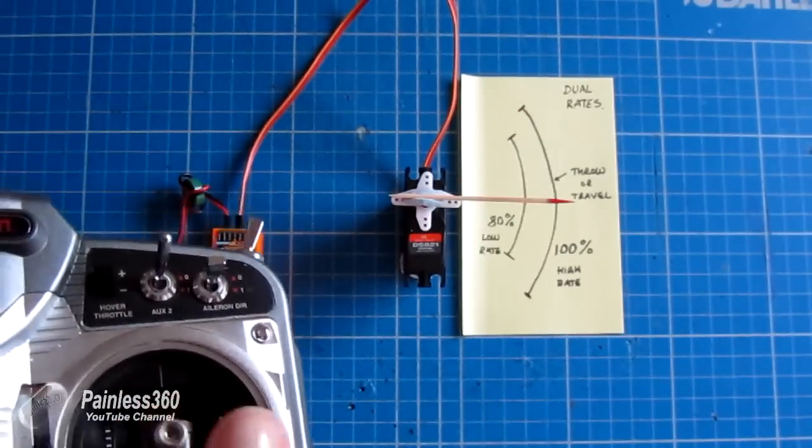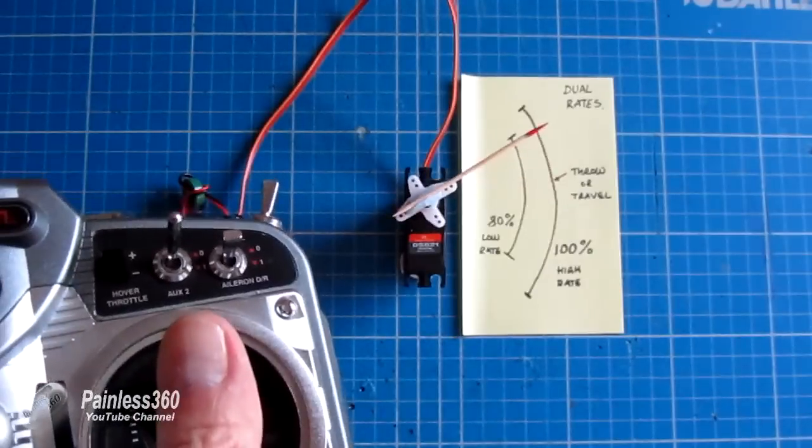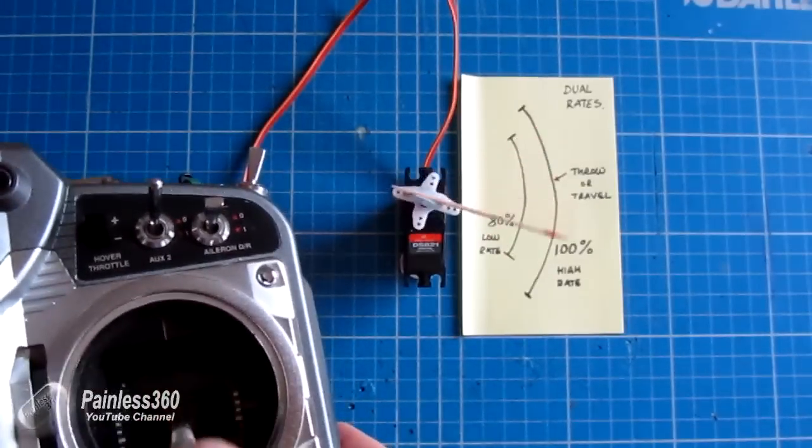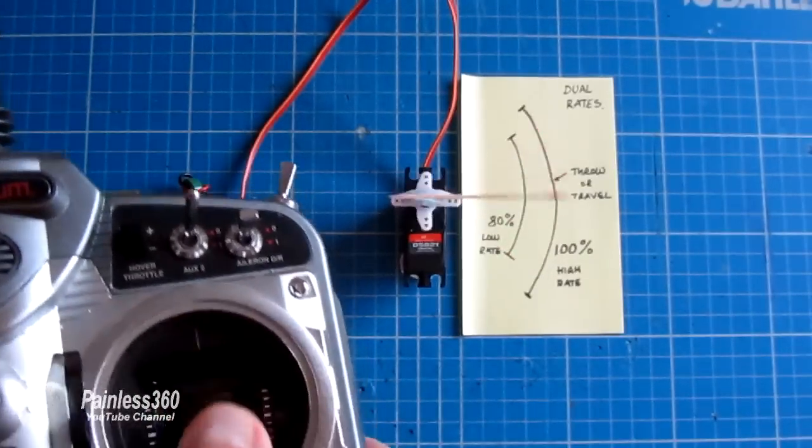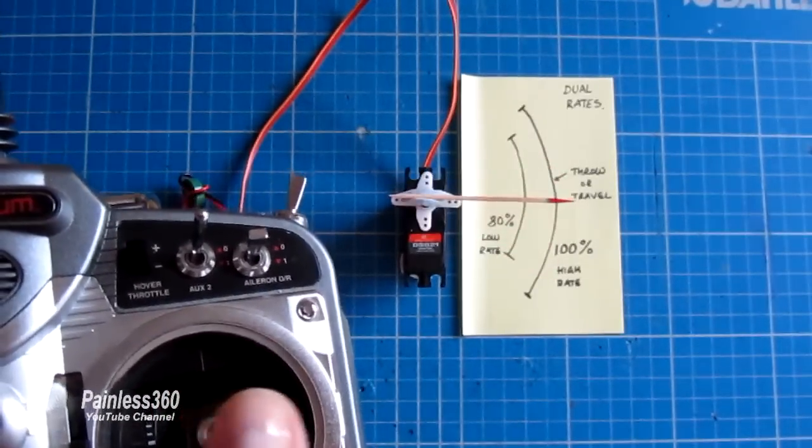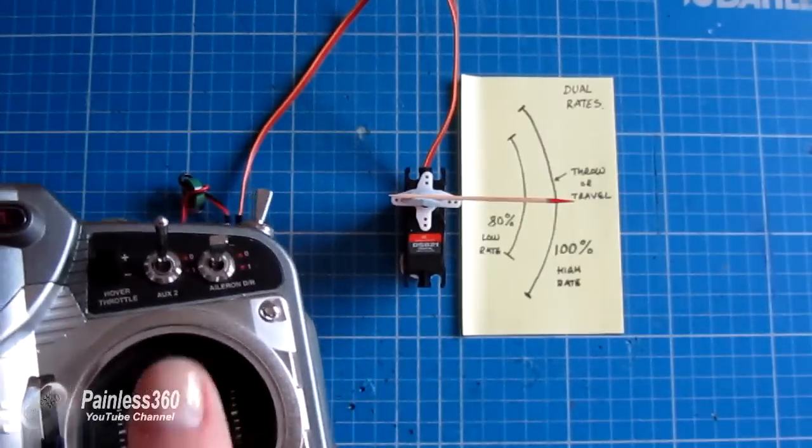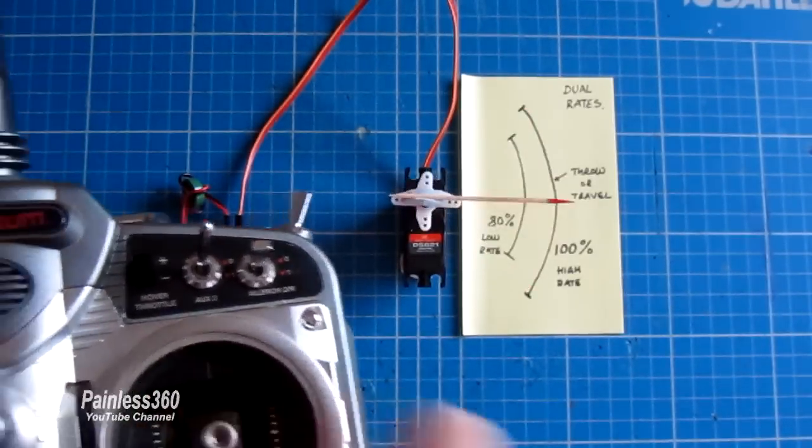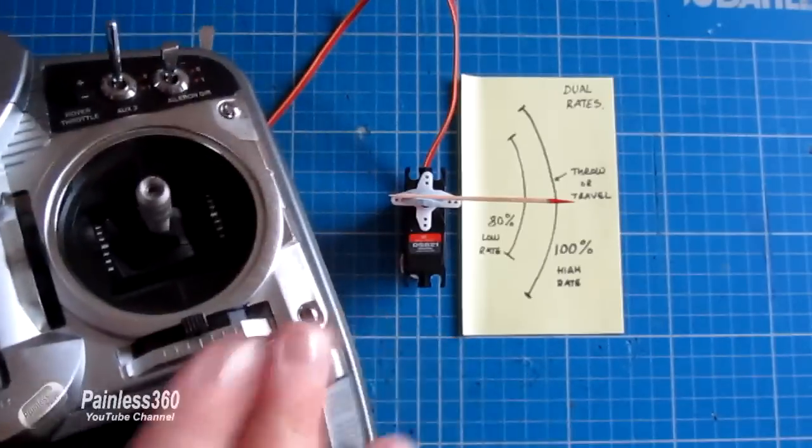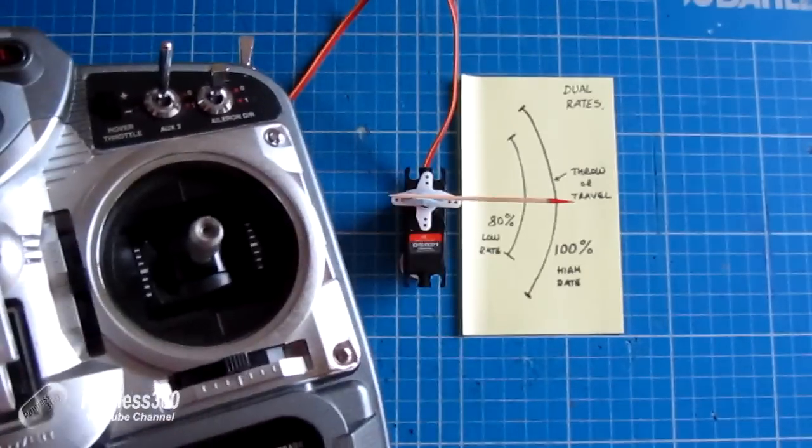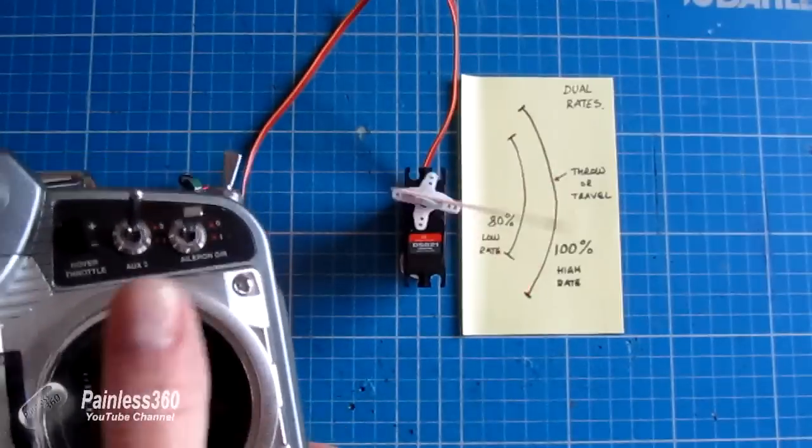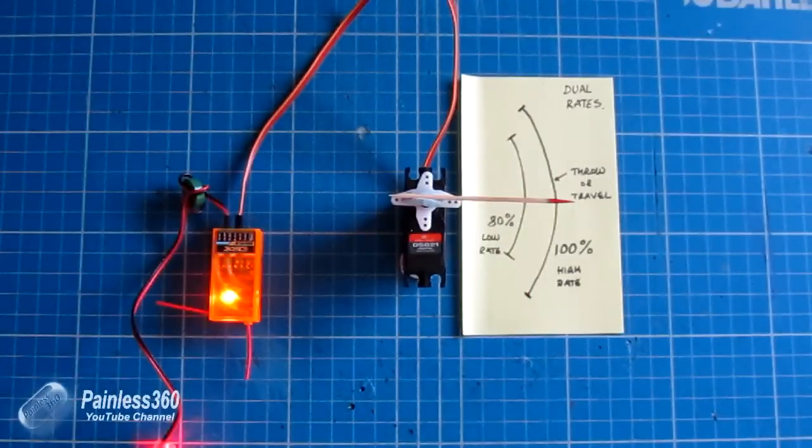So what you can do is maybe take off at 80%, so you have gentle control swooping flight, and then when you want to show off or try something a bit impressive, snap rolls, loops, etc., pop it into a hundred percent, and now you get that greater movement. So it means that without having to land the plane and change the physical linkages on the control surface, you can change how aggressive everything moves by how much movement you're actually getting out of the radio.